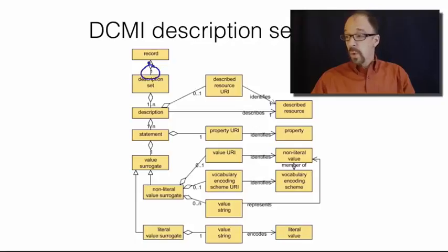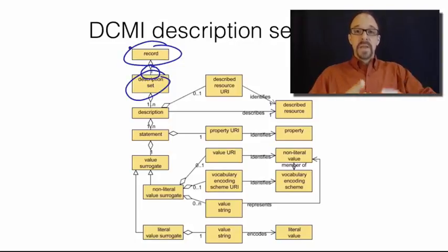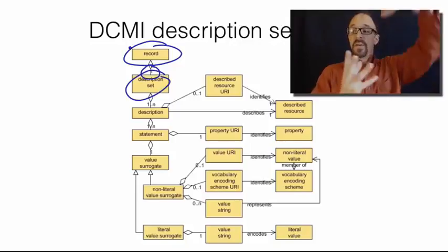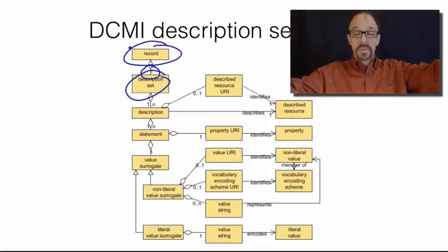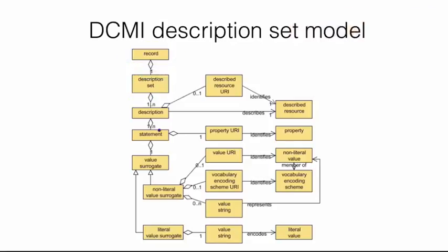One and only one description set makes up a record. The metadata record is the totality of the descriptions. The entire set of statements that you have made about your resource makes up the metadata record.